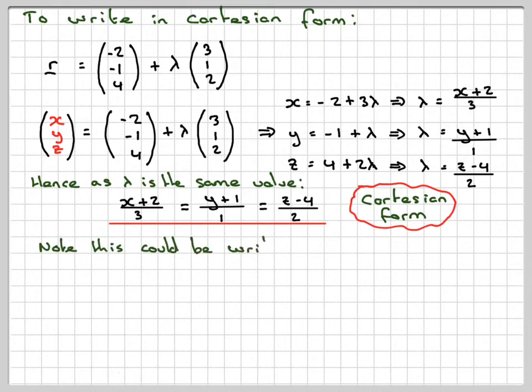Note, this could have been written as (X + 2)/3, Y + 1 with nothing underneath it (so we assume it's 1), and (Z - 4)/2. But if you do write it like this, the directional vector is (3, 1, 2), and the point that the line goes through is (-2, -1, 4), which you get from here. So it is quite useful.